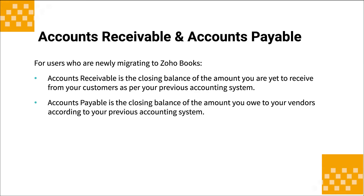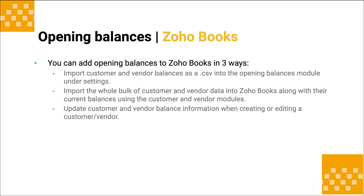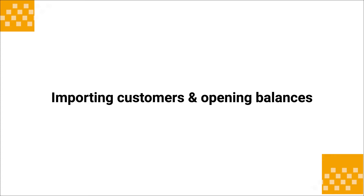Accounts receivable is the closing balance of the amount you are yet to receive from your customers in your previous accounting system, whereas accounts payable is the closing balance of the amount you owe your vendors. There are three ways to enter these balances. The first method is to import only the opening balances of customers and vendors — used when you have already added their details in Zoho Books. The second and easiest method is to import customers and vendors along with their opening balances. The third way is to enter opening balances of customers and vendors individually.